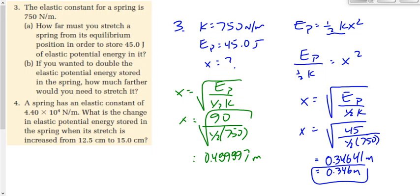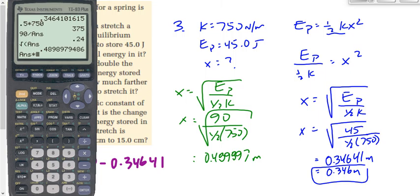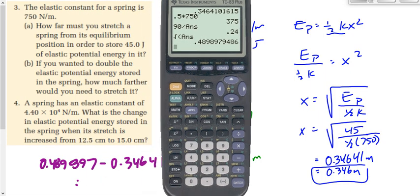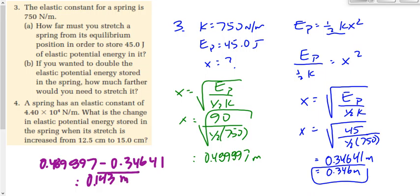To find how much further we need to stretch it, we take final minus initial: 0.48989 minus 0.34641 gives us 0.143 meters. This is positive because the final displacement is larger than the initial — we're gaining displacement, not losing it. The positive doesn't mean a direction; it means it's more than it was before.